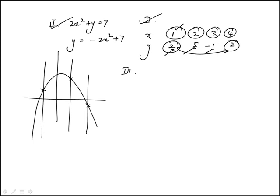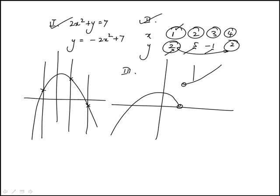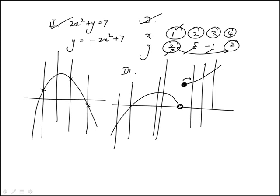For the third one, we have a piecewise function with an open circle and a solid circle. This satisfies the vertical line test: at the transition point, the value corresponds to the closed circle and not the open one. Going to the right gives a unique value, and going to the left also gives a unique value. So choice three is also a function. The answer is 1, 2, and 3 — answer choice E.